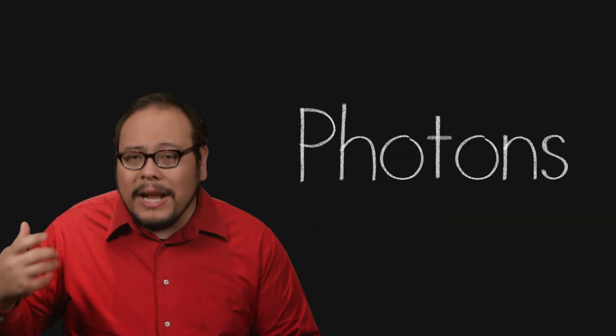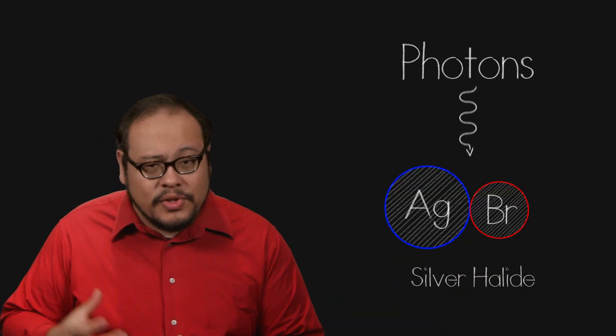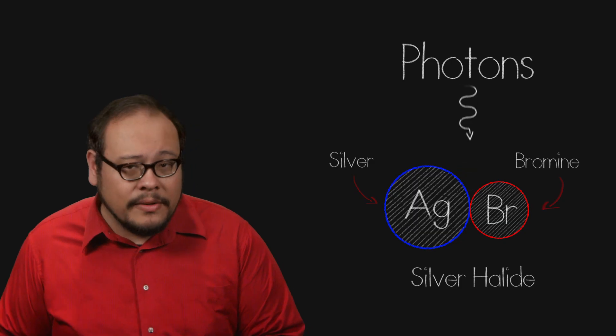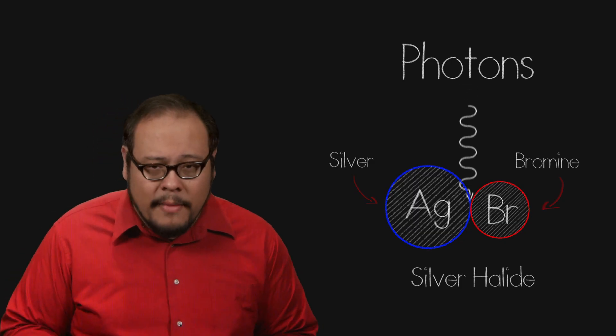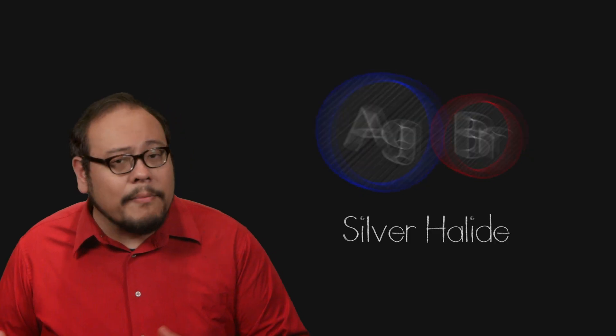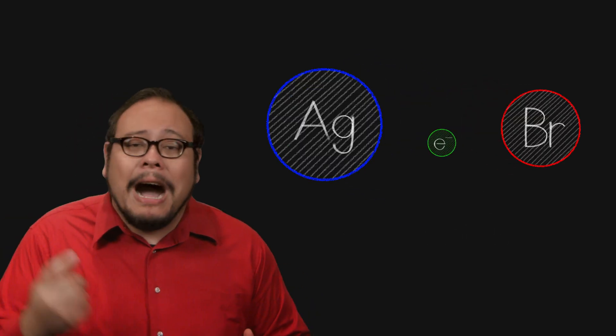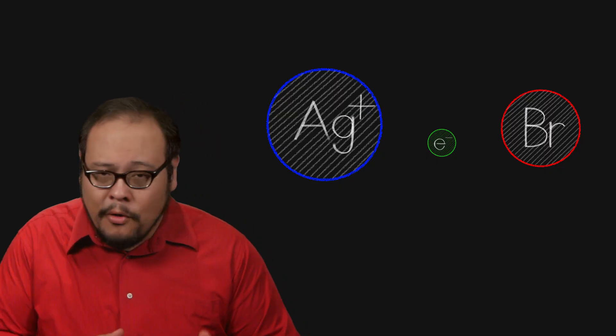Photons, the quanta packets of energy that make up light, strike and get absorbed by the atoms in a silver halide crystal, in this case silver bromide. This extra energy causes the bond between the silver and the bromide to break resulting in a free electron, a positively charged silver ion and a bromide atom.